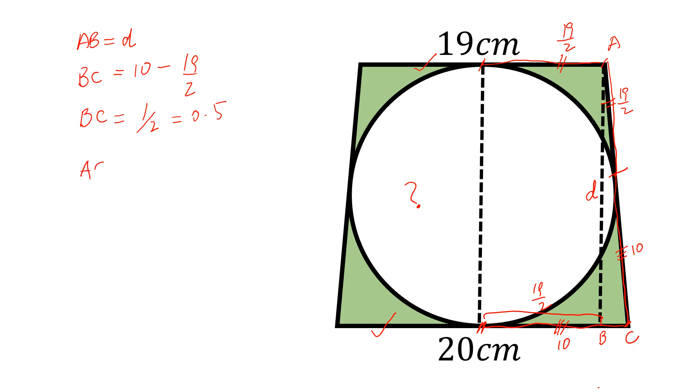Now AC is equal to 19.5. Now ABC is a right angle triangle. So we can write D square plus 0.5 square is equal to 19.5 square.